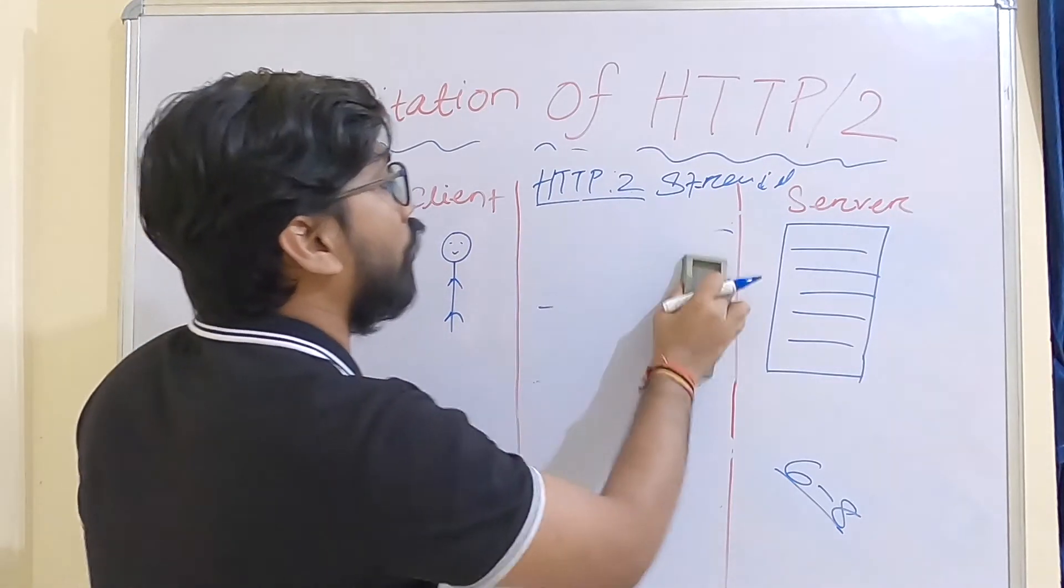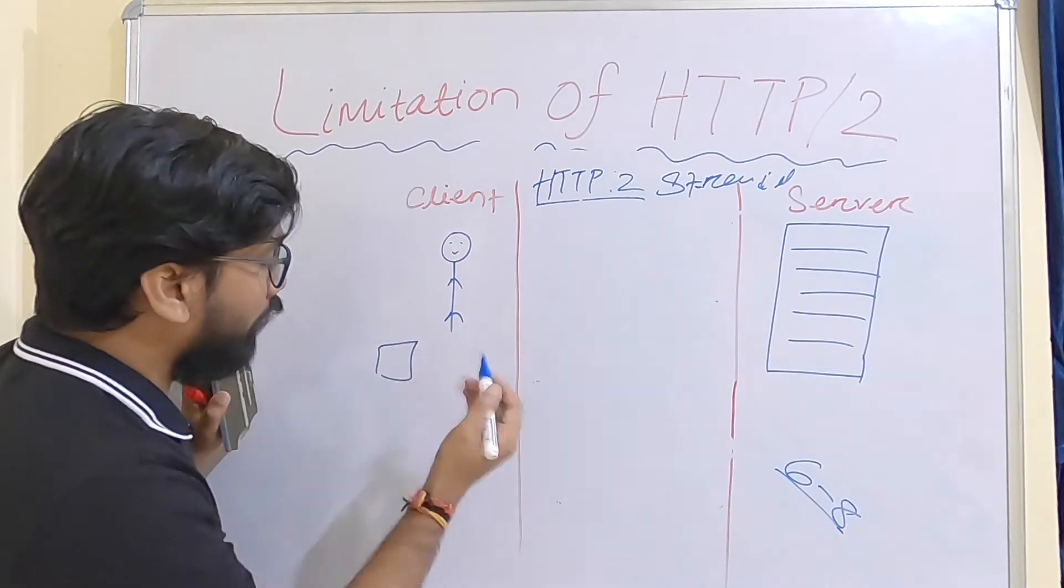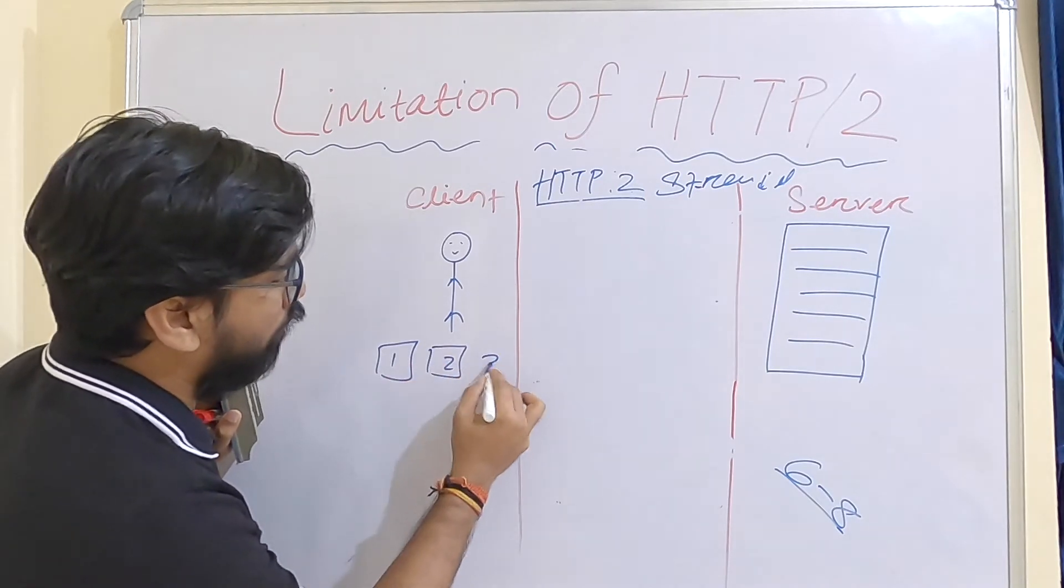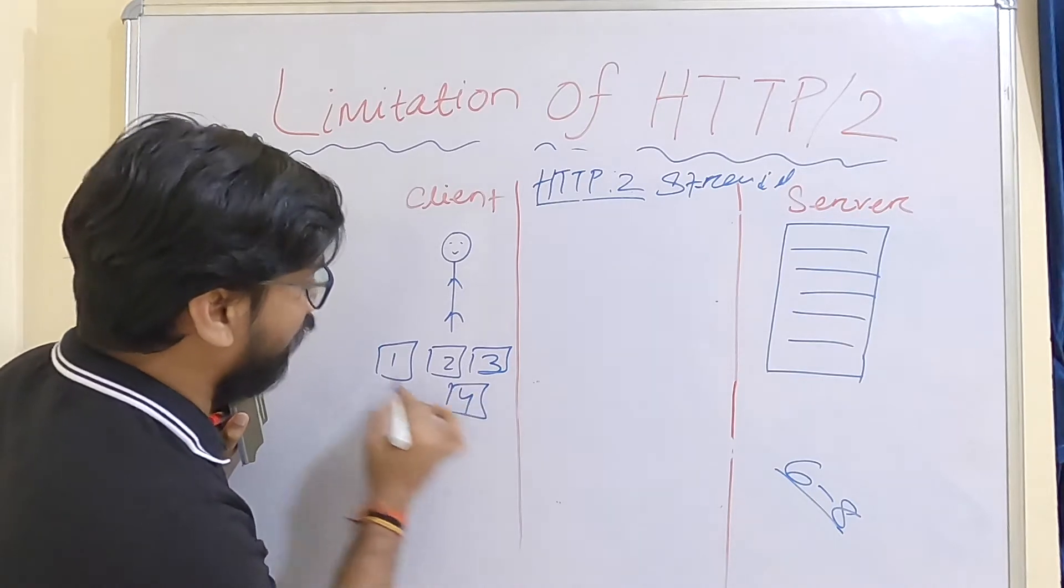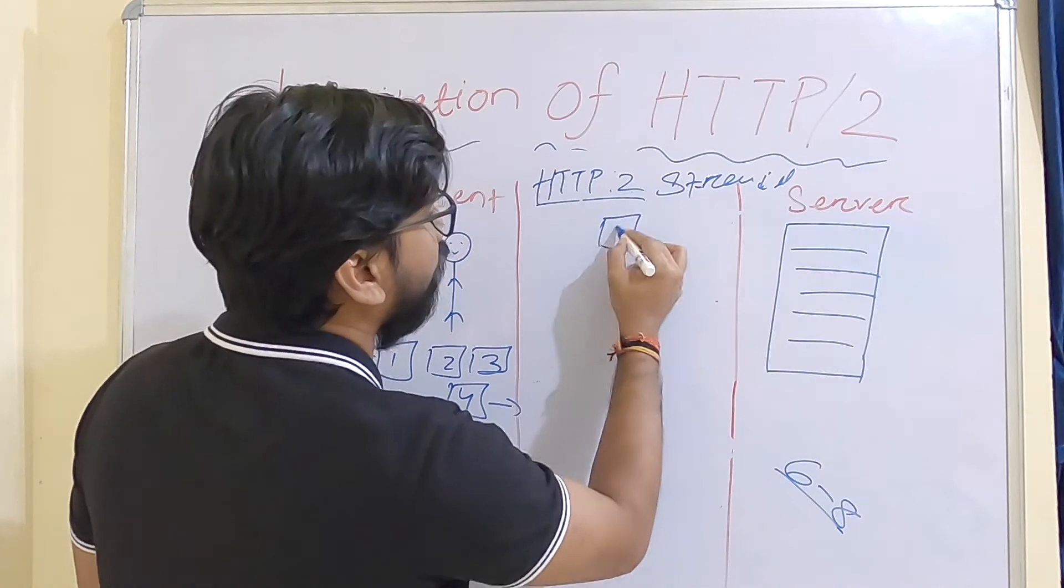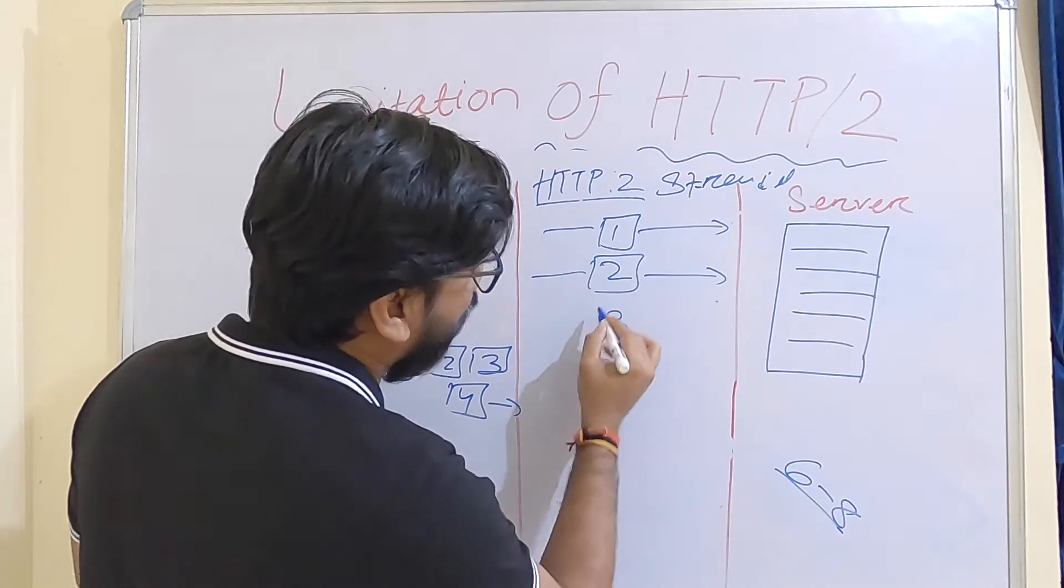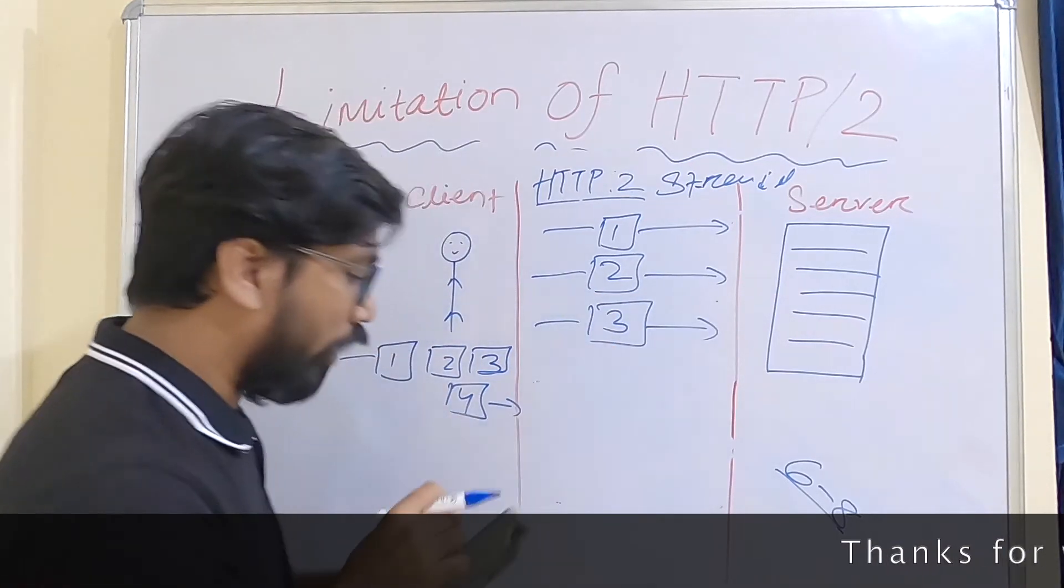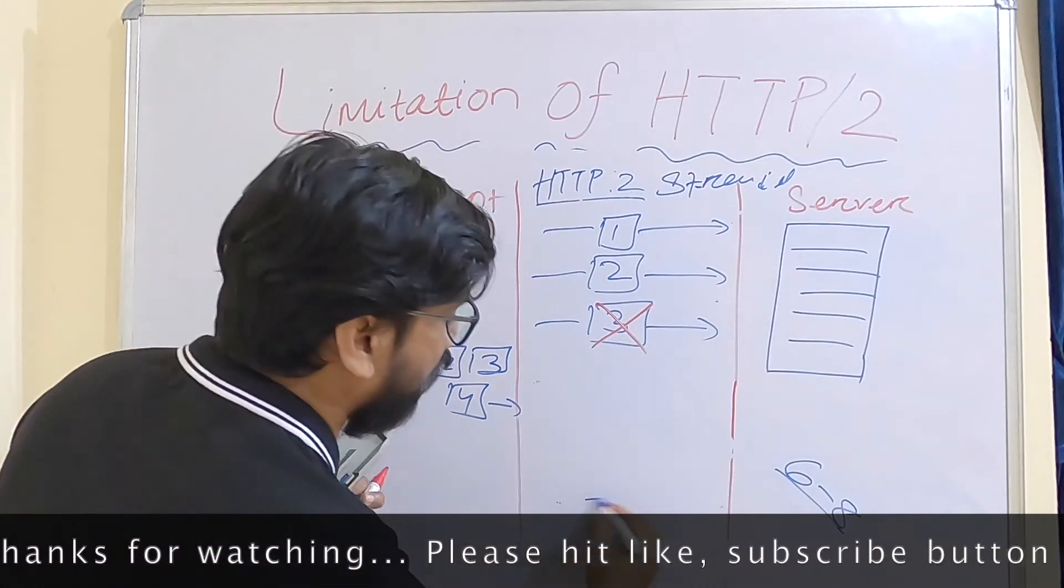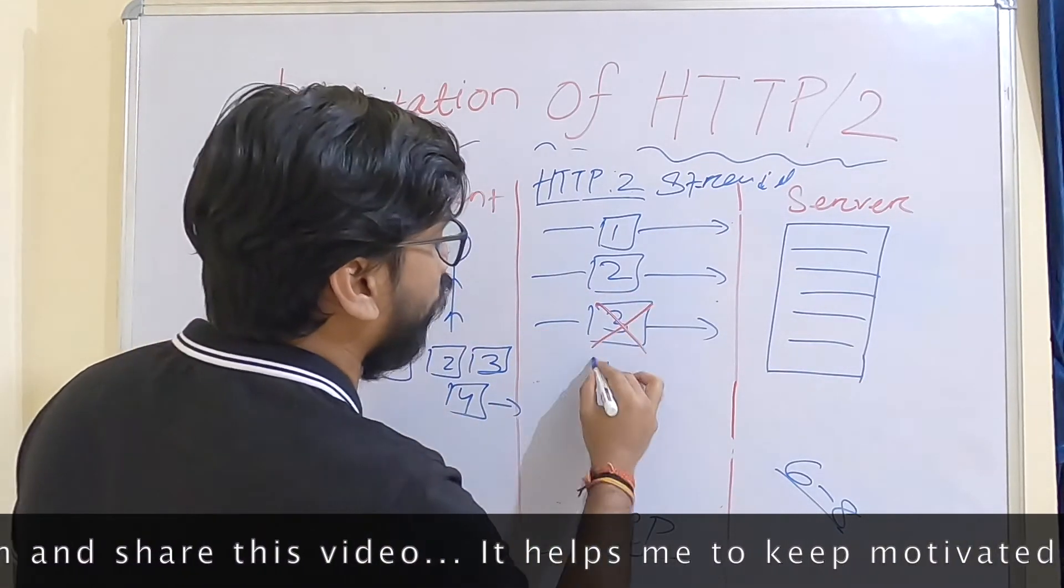Let's discuss TCP level head of line blocking - how it occurs in HTTP/2. Suppose I have requested one request and there are packets: one, two, three, and four packets are requested. Suppose here comes one, two successfully, three is not successful - it's lost between the TCP layer. This is the TCP layer, so three is lost and then four is delivered.